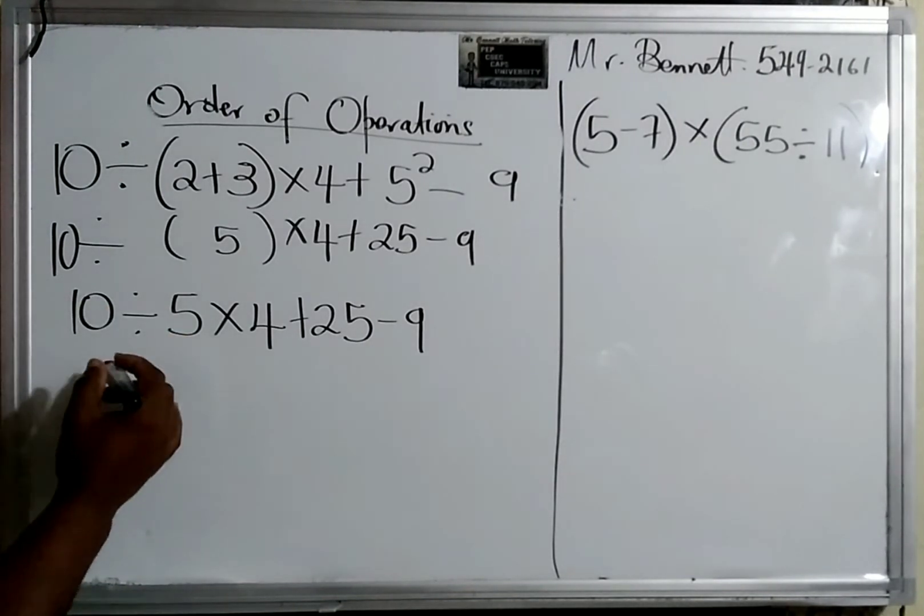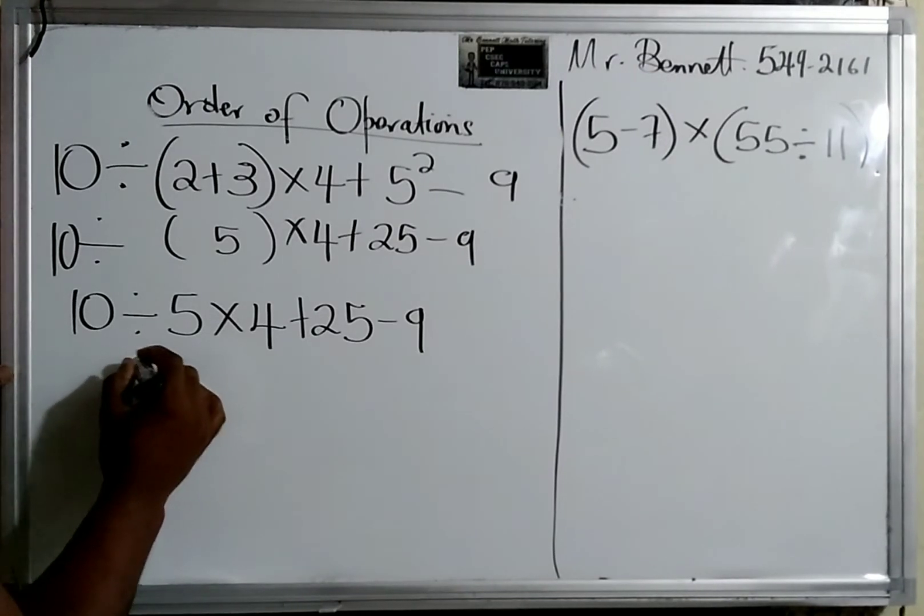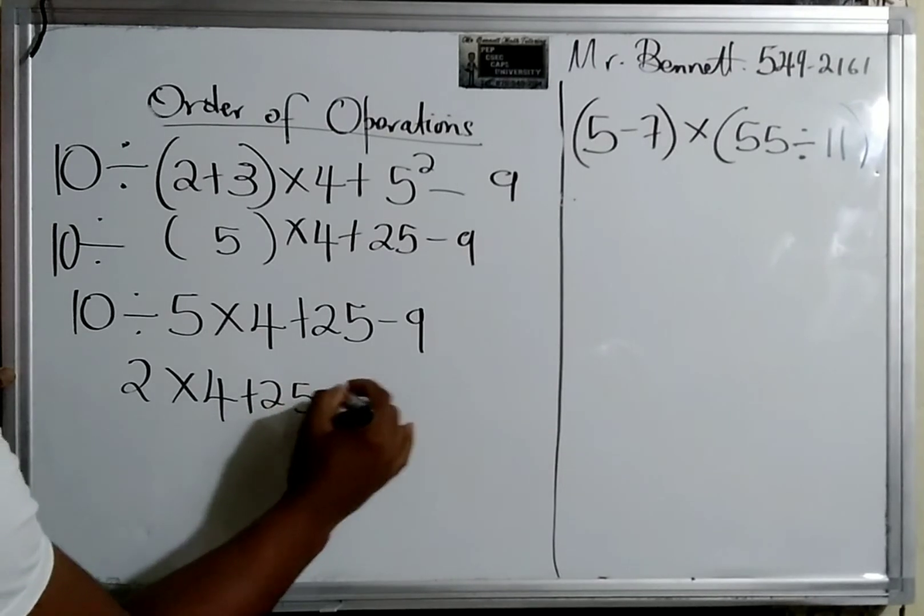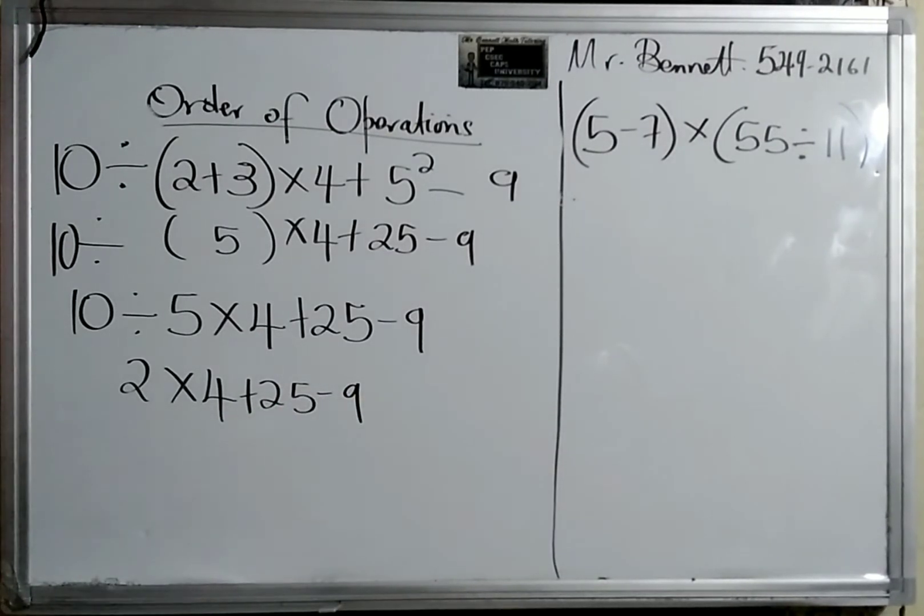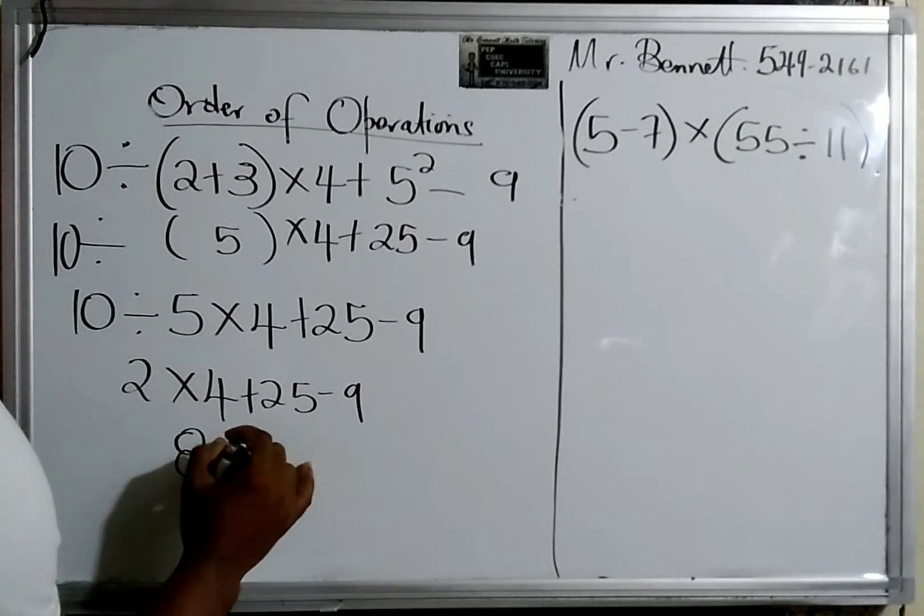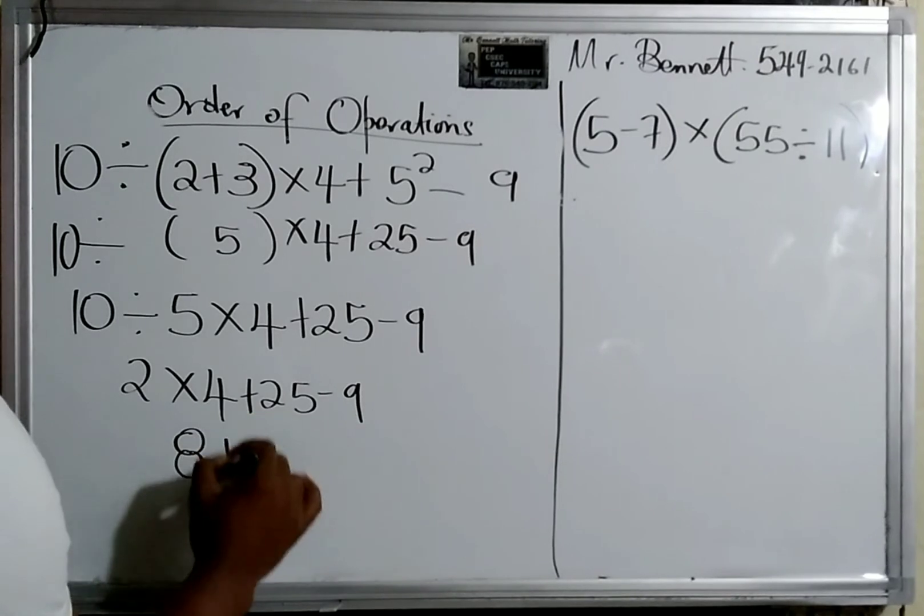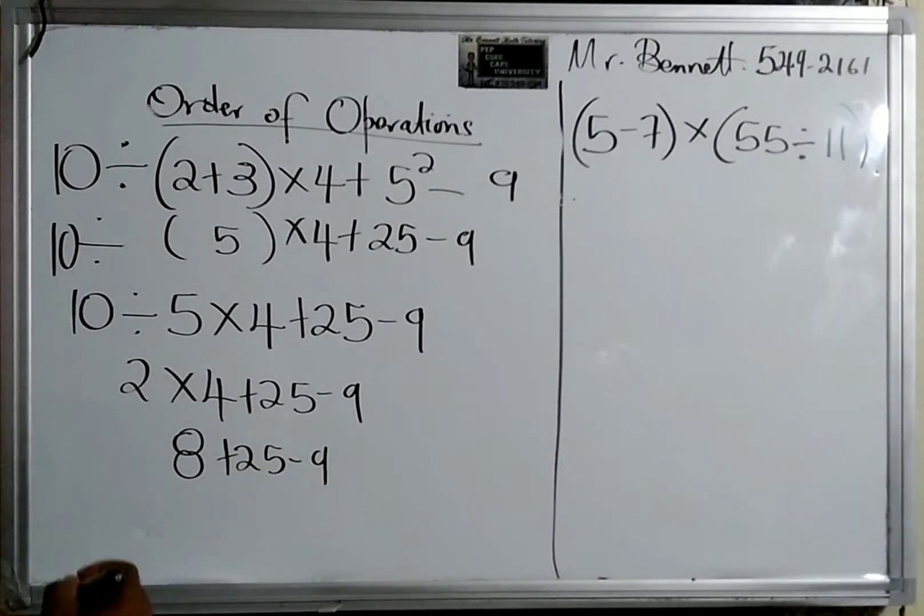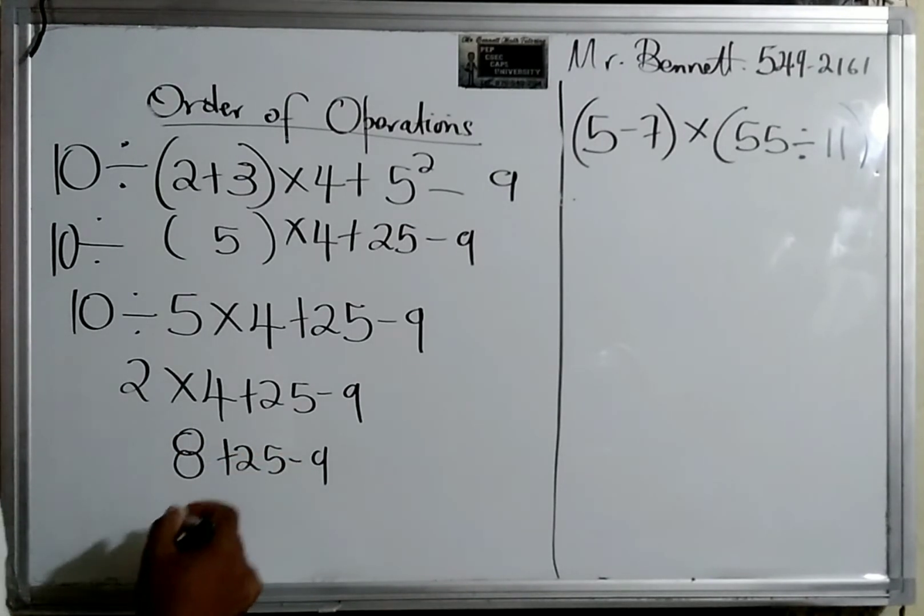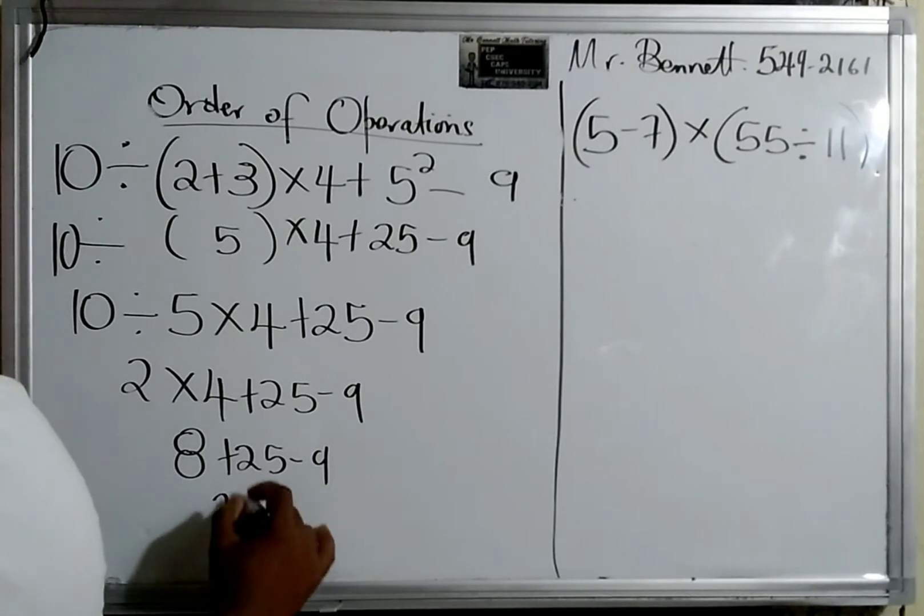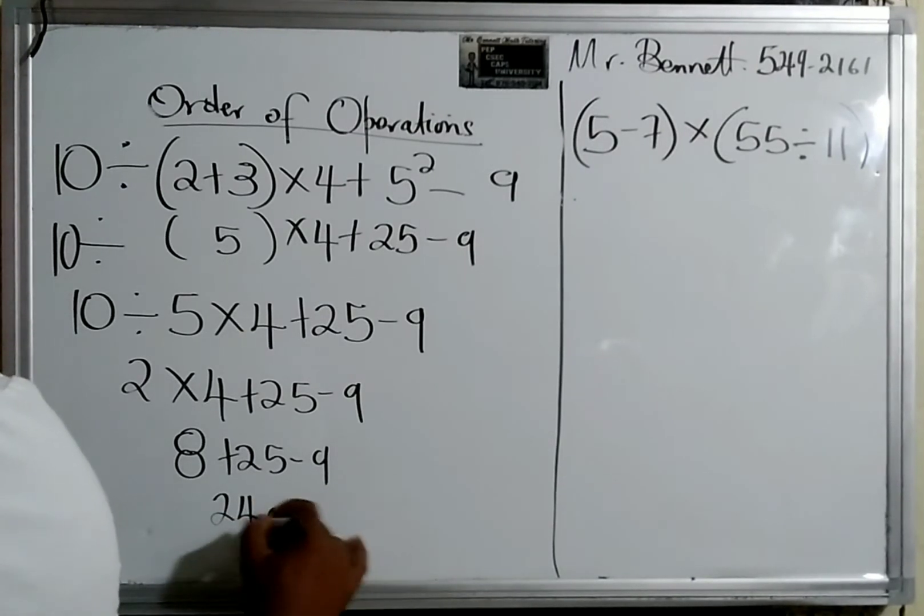10 divided by 5 would be 2×4+25-9. Now, of our operations, we multiply first, so 2×4 would be 8, plus 25 minus 9. So basically this is 24, right? Because this will give you 33, and then you get 24. So the answer would be 24.